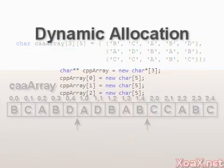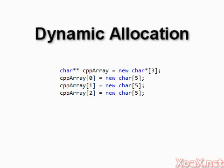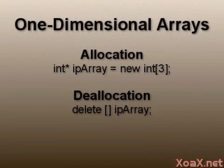However, if we don't know the size at compile time, then we need to allocate the memory for our arrays dynamically using new. We begin with a review of dynamically allocated one-dimensional arrays, since they are the basis for creating multi-dimensional arrays.